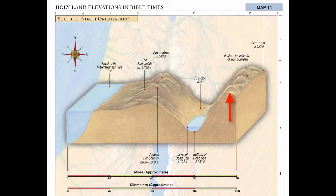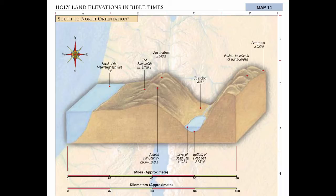Just look at that drop between Jerusalem and the Dead Sea — going from 2,540 feet above sea level down to 1,302 below. So if you leave Jerusalem and it's in the 50s or 60s with a jacket on, you get down to the Dead Sea and you're in the desert — it might be in the 80s. It's quite extraordinary.